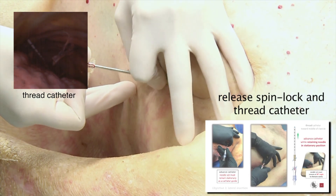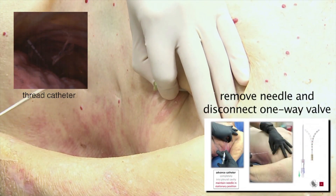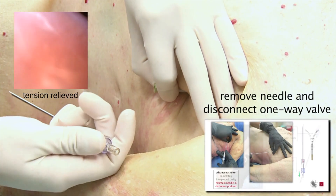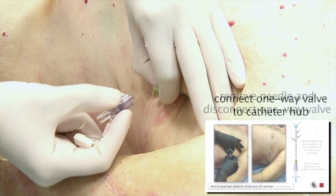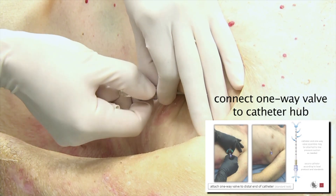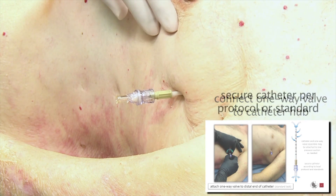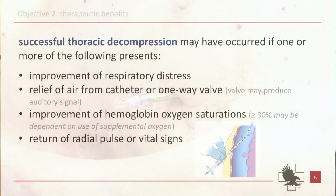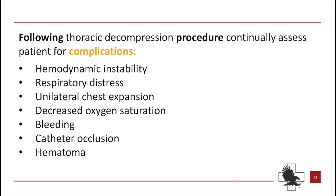Remove needle and disconnect one-way valve. Connect the one-way valve to the catheter hub. Secure catheter per protocol or standard. Monitor your patient for successful decompression or the development of any complications.